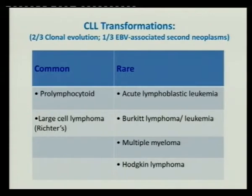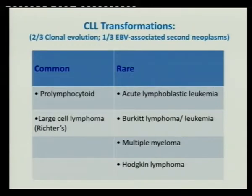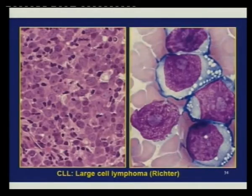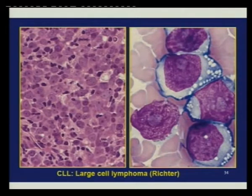CLL can transform to high-grade lymphomas — common ones are prolymphocytic transformation and large cell lymphoma (Richter's transformation). We don't see it as much now because CLL therapies are better and chances of large cell transformation are decreasing. Rarer variants include Burkitt lymphoma arising from CLL, and interestingly, Hodgkin lymphoma can coexist with CLL, likely due to EBV infection these patients harbor. In large cell transformation, the clinical picture includes high LDH, large lymph nodes, and low counts; the morphology looks nothing like CLL.